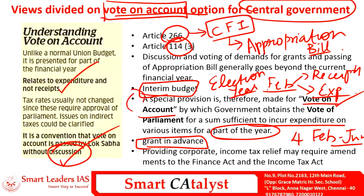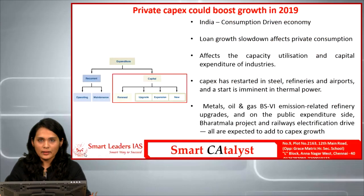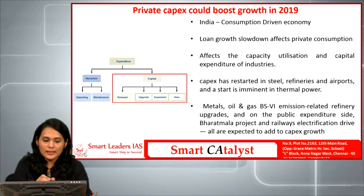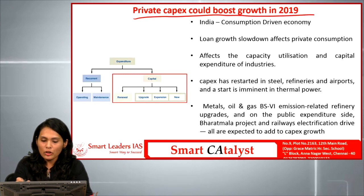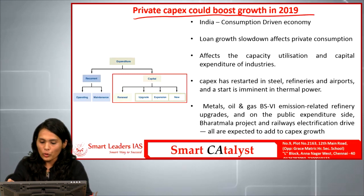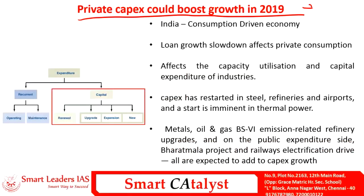As mentioned, vote on account is presented via interim budget, and the interim budget usually does not make any drastic changes. Providing corporate or income tax relief requires amendment of the Finance Act and Income Tax Act, which is conventionally not done in an interim budget.